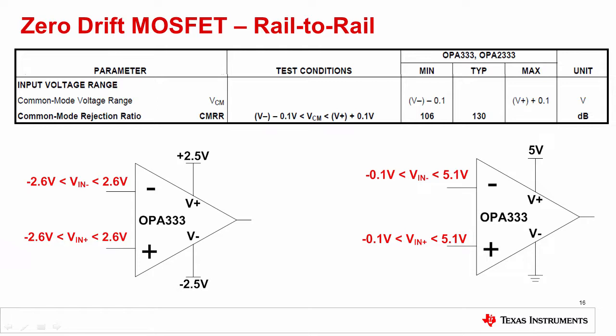Because the zero drift technology minimizes the VOS of the amplifier, the crossover distortion is heavily reduced as well. This is evident in the CMRR spec, which has a typical value of 130 dB across the entire linear common mode range.